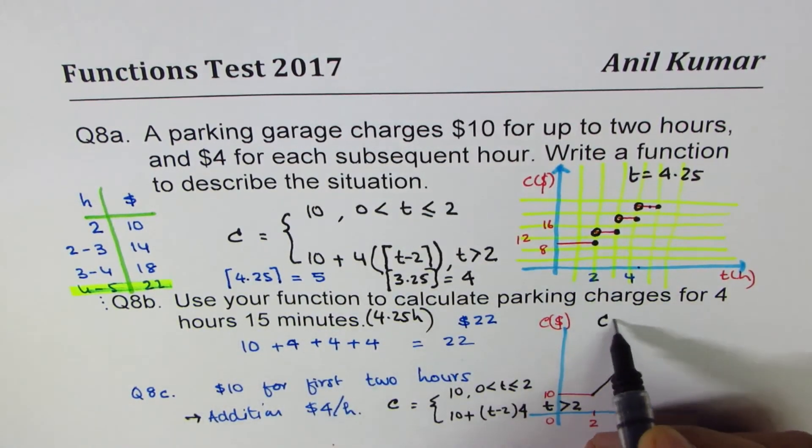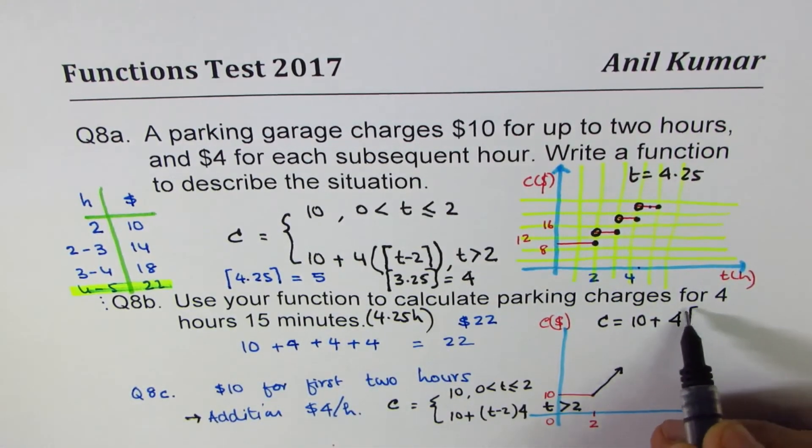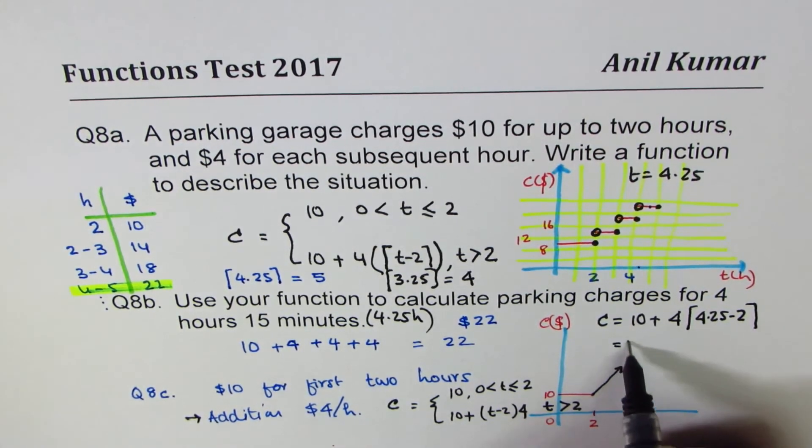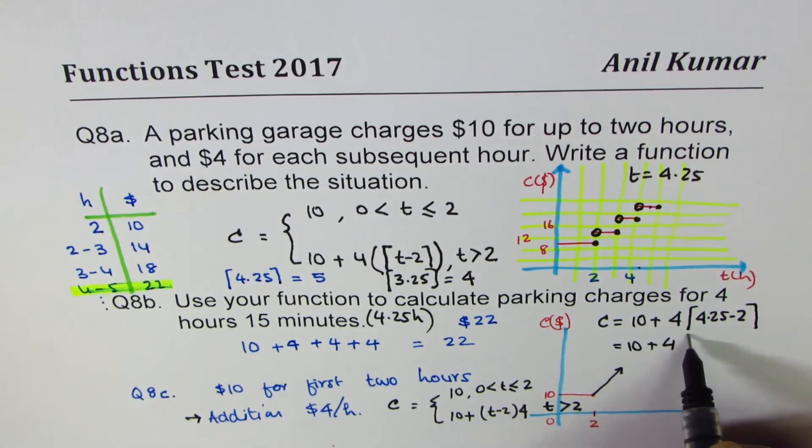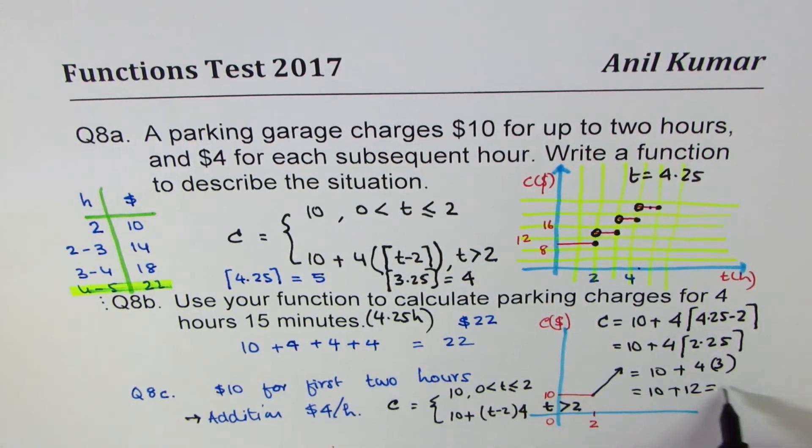So we are using this formula. So we have cost equals to 10 plus 4 times that ceiling function, 4.25 take away 2, which is 10 plus 4 times 2.25. 4.25 take away 2 is 2.25, which is 10 times 4 times. We have to round to high here, so we get 3. So 10 plus 12, which is 22.